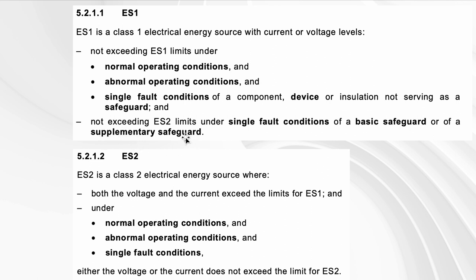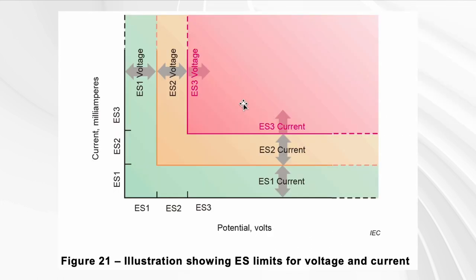If there's a single fault condition of a basic safeguard or of a supplementary safeguard, then it must not exceed ES2. This is already a pretty bad situation. If it exceeds ES2, it is ES3 — and ES3 is really the red area you want to avoid.